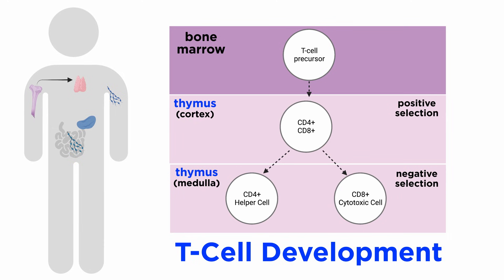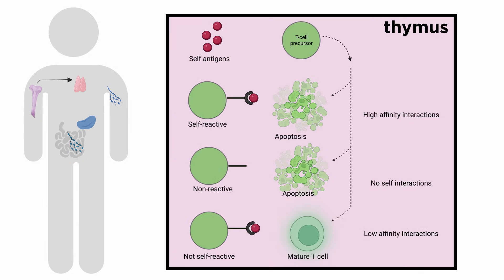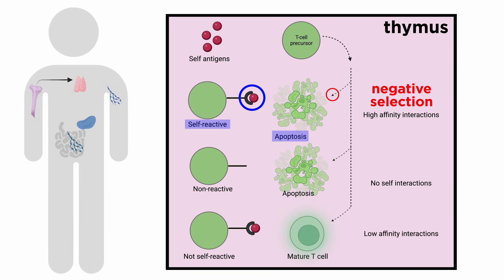T cell development within the thymus undergoes a major developmental checkpoint in which TCR, or T cell receptor signaling, is involved. Thymocytes which possess TCR with a very high affinity for self-peptide MHC complexes undergo apoptosis. This process is referred to as negative selection.